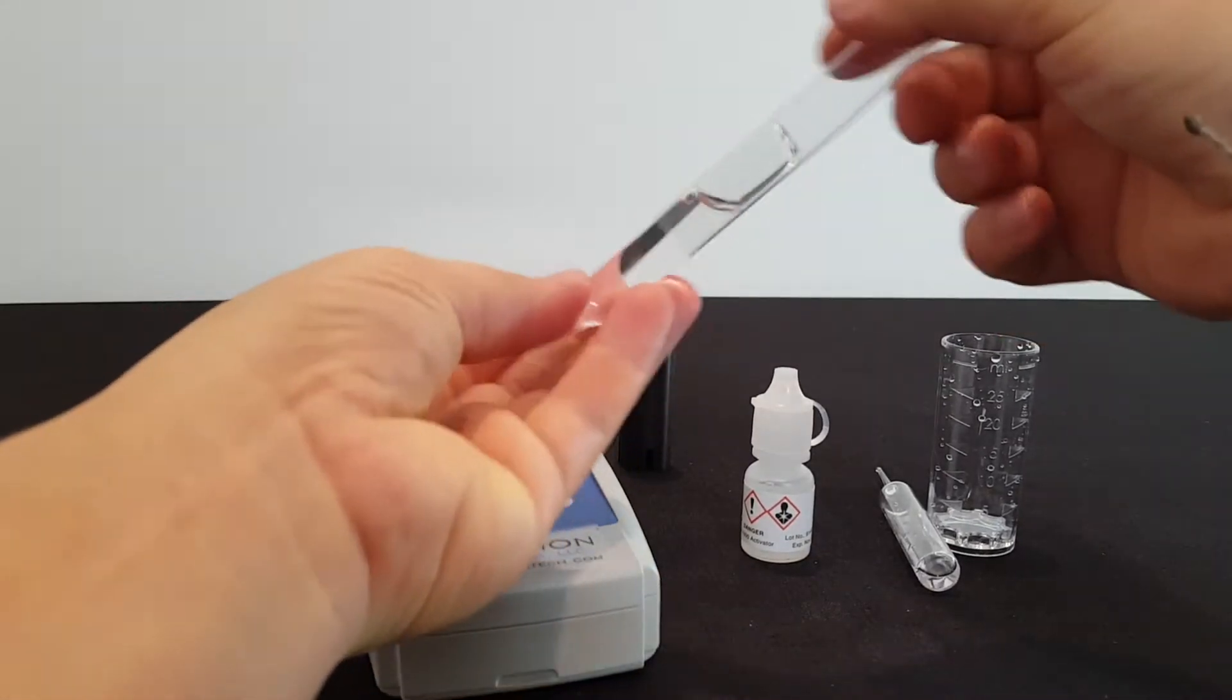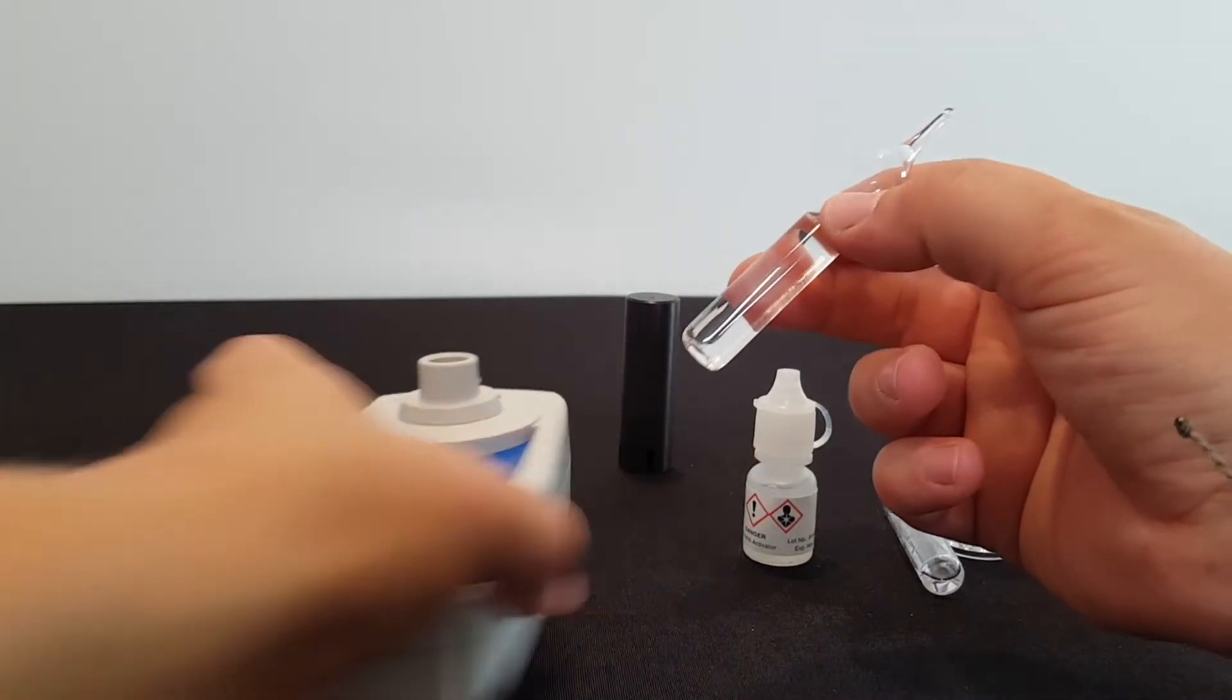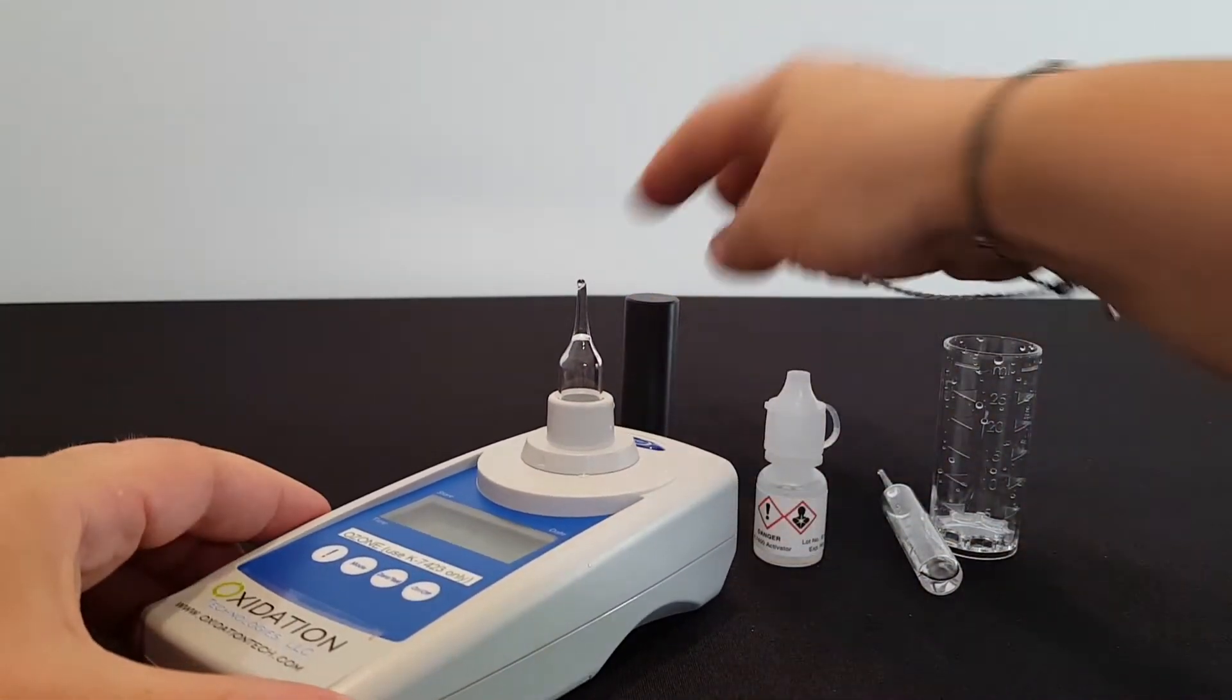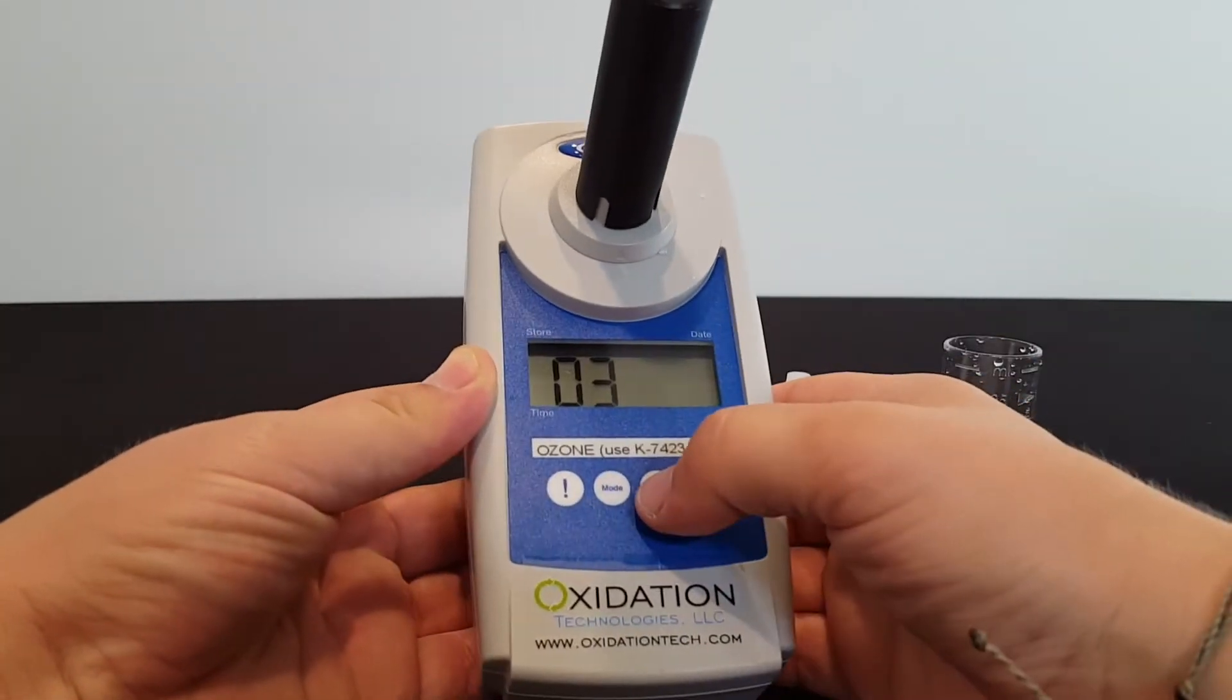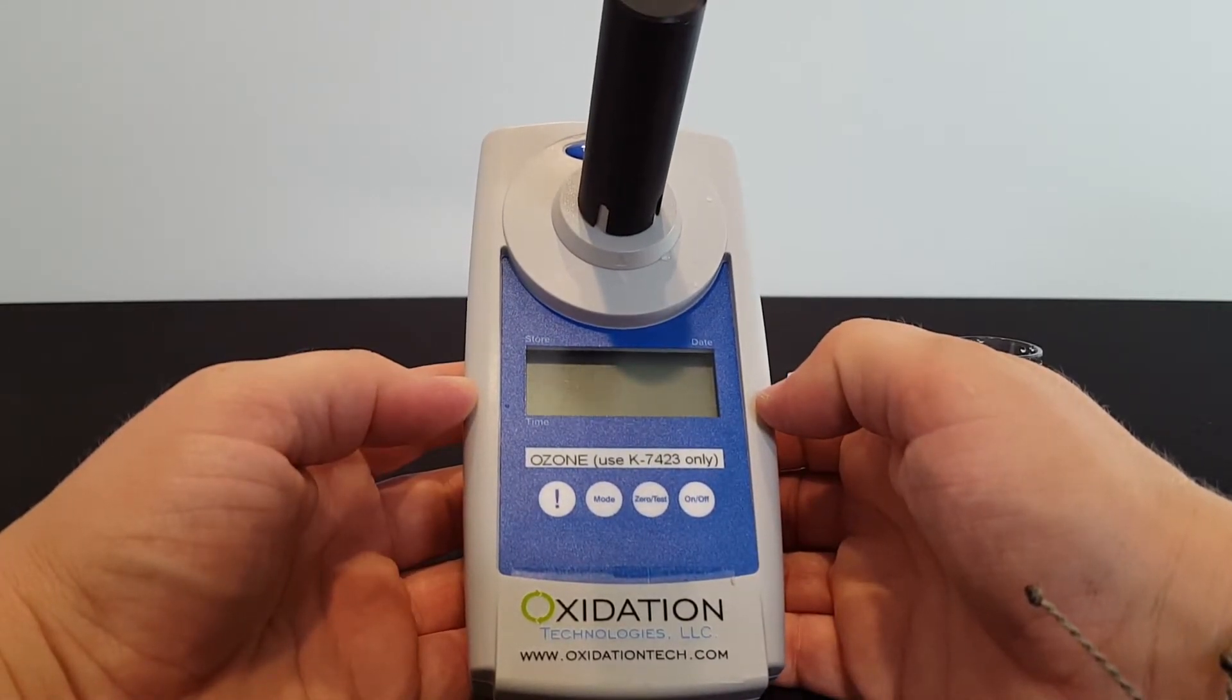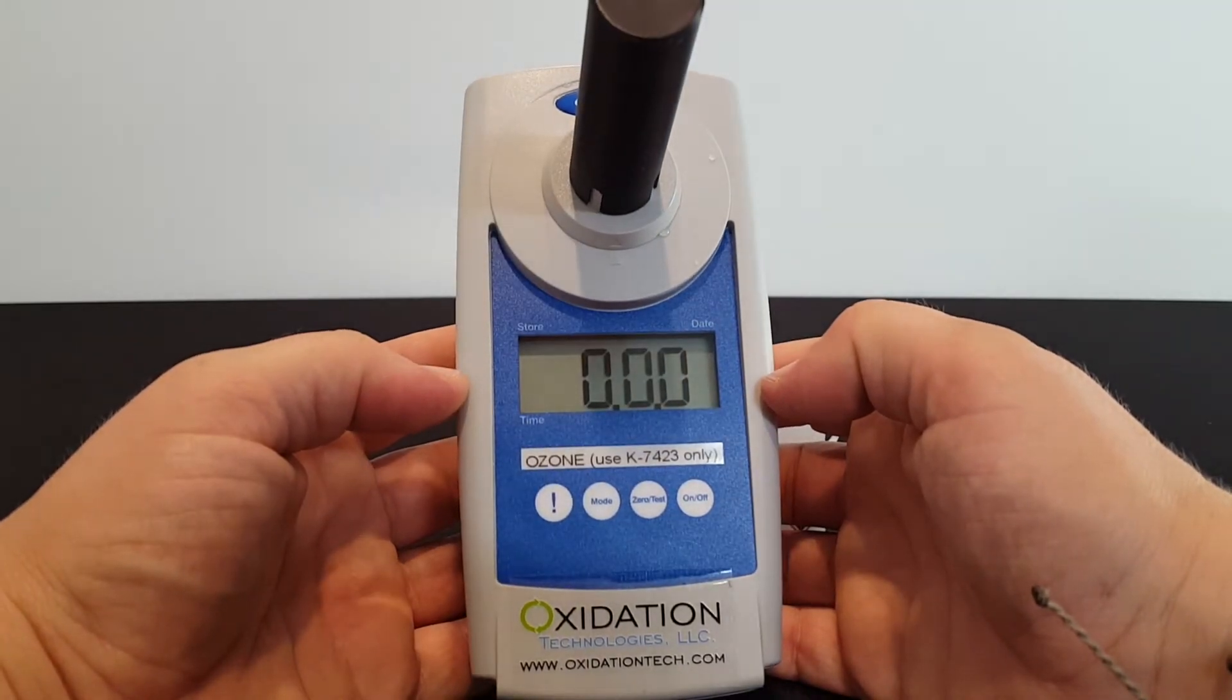I'm going to take the zeroing ampoule. This is included with each kit. I am going to press it all the way down into the port. I'm going to put the light shield over it, and then I am going to press the zero test button. The O3 symbol will flash for about eight seconds, and then the screen will read 0.0.0.